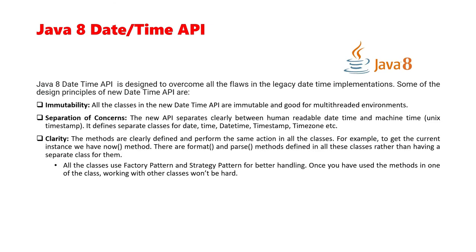When we talk about clarity, the methods are clearly defined and perform the same action across all the classes. For example, to get the current instance we use the 'now' method. There are format and parse methods defined in all these classes rather than having a separate class for them. All the classes use factory and strategy patterns for better handling, so once you've used a method in one class, working with other classes is easy.